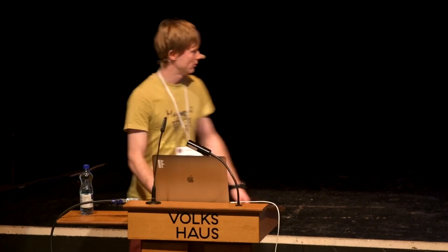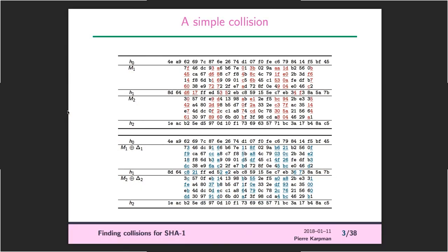So let's get to it — that's a SHA-1 collision. That's 1024 bits in two blocks of messages, and they're kind of random. They have differences in specific locations — red and blue — and they hash to the same value.